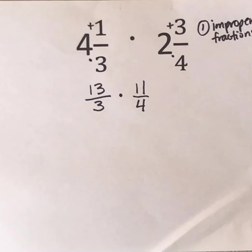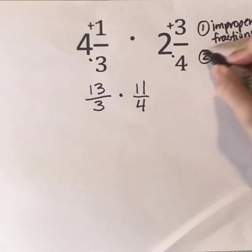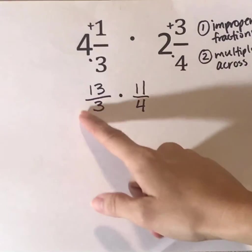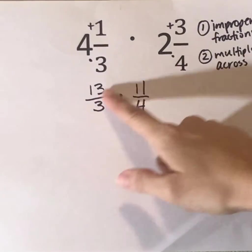Okay, next step is we're going to multiply across. The other thing I like to check also before I multiply across is I always like to check to see if I can cross simplify.